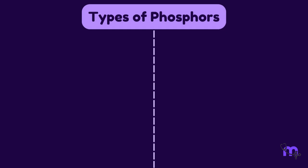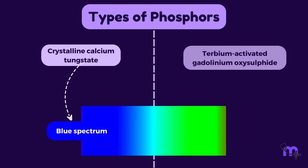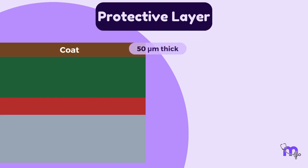The two types of phosphors used in dental screens are crystalline calcium tungstate, which fluoresces in the blue spectrum, and terbium-activated gadolinium oxysulfide, which fluoresces in the green spectrum.